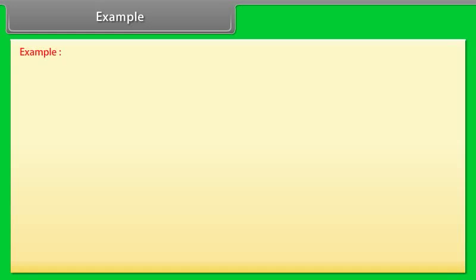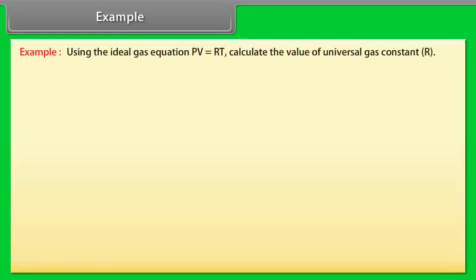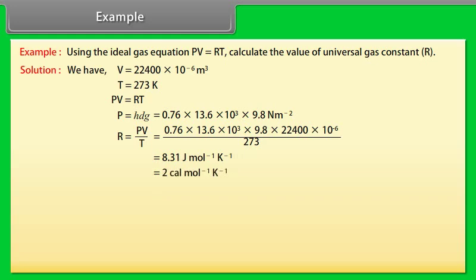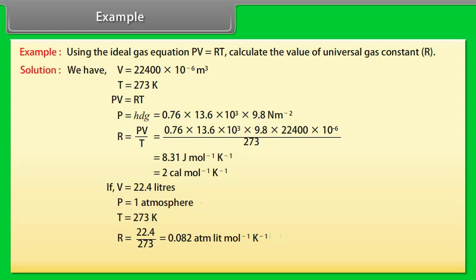Let's take an example of kinetic theory of an ideal gas. Using the ideal gas equation PV equals RT, calculate the value of universal gas constant. We have V equals 22400 into 10 to the power minus 6 meter cube, T equals 273 Kelvin, PV equals RT, P equals Hdg. Now we calculate value of R by putting the values: R equals PV by T equals 2 calorie per mole per Kelvin. If V equals 22.4 liters, P equals 1 atmosphere, T equals 273 Kelvin, R equals 0.082 atm liter per mole per Kelvin. Hence the value of universal gas constant is 0.082 atm liter per mole per Kelvin.